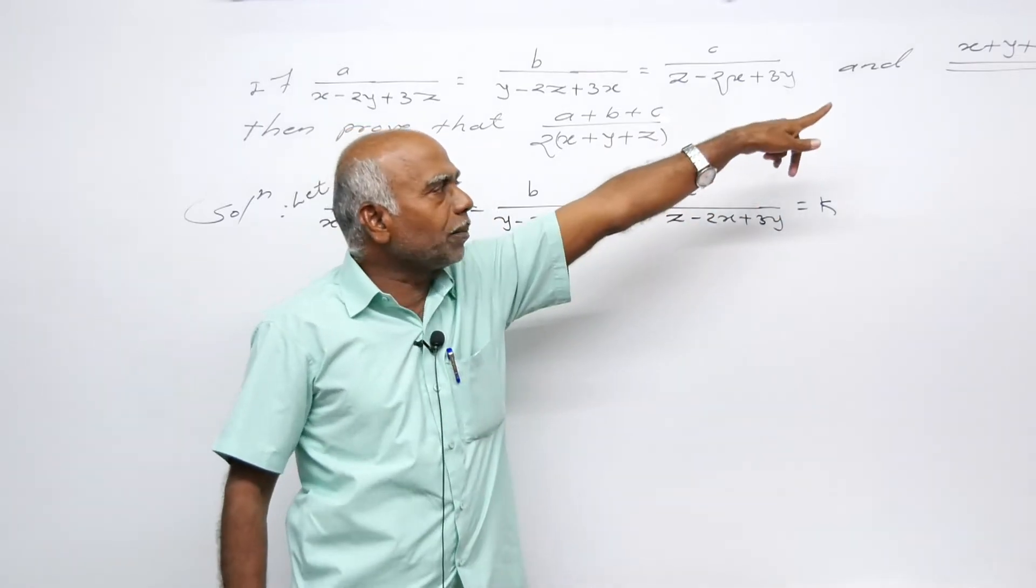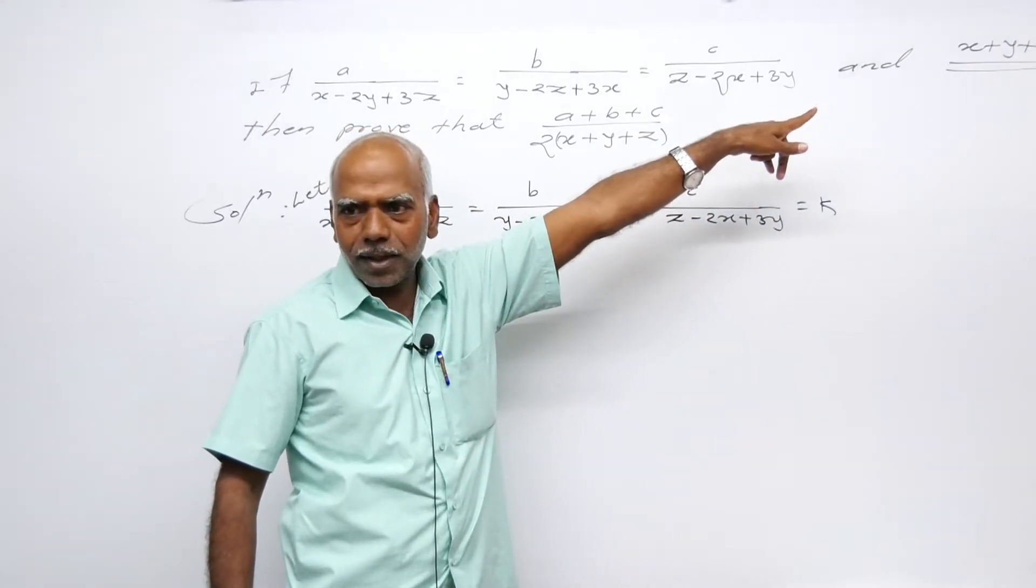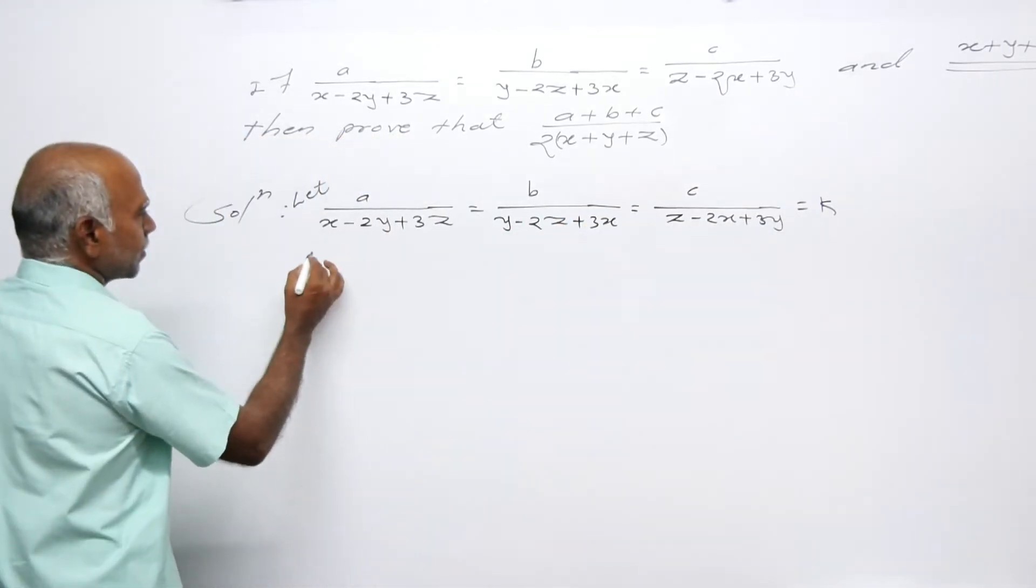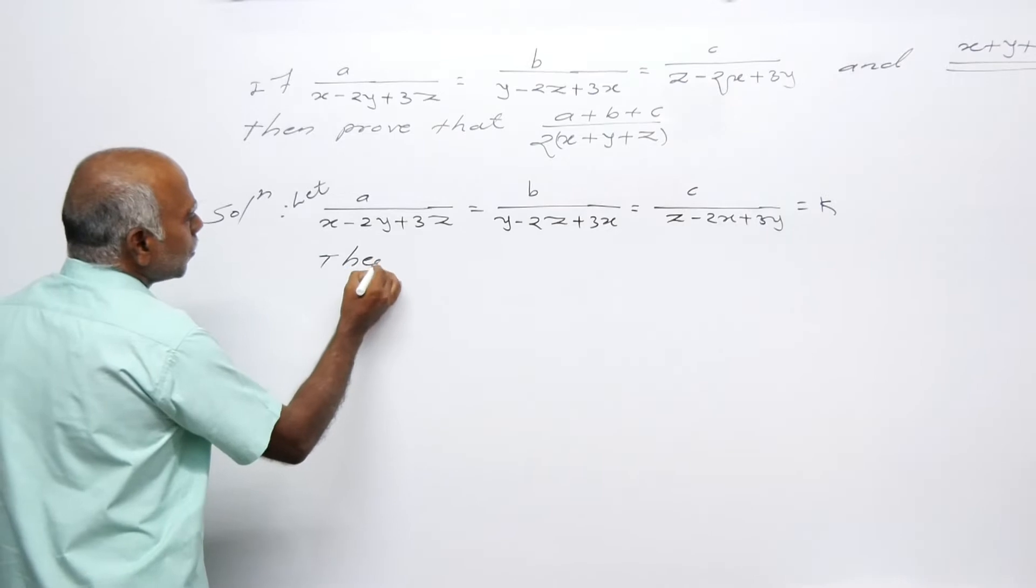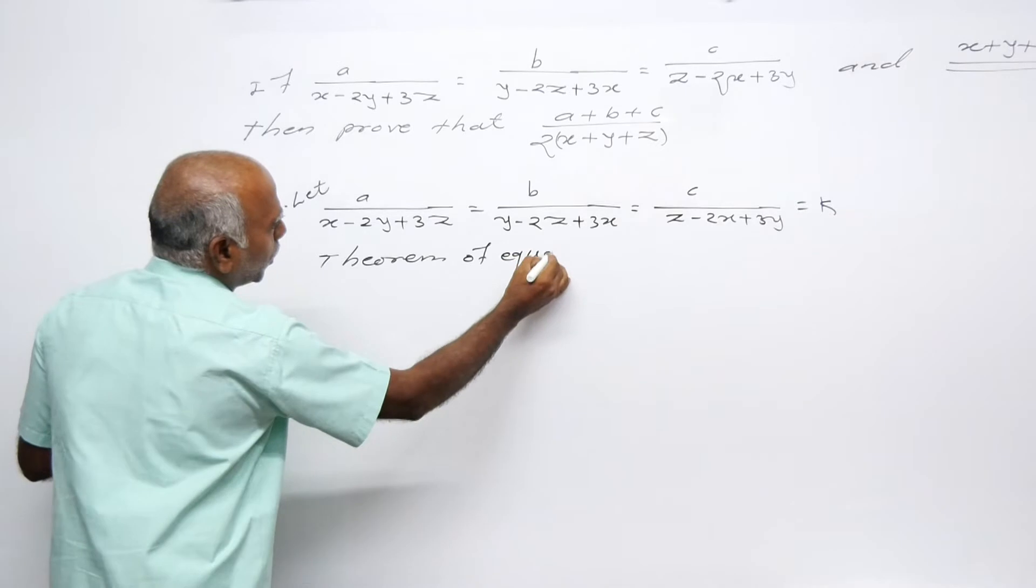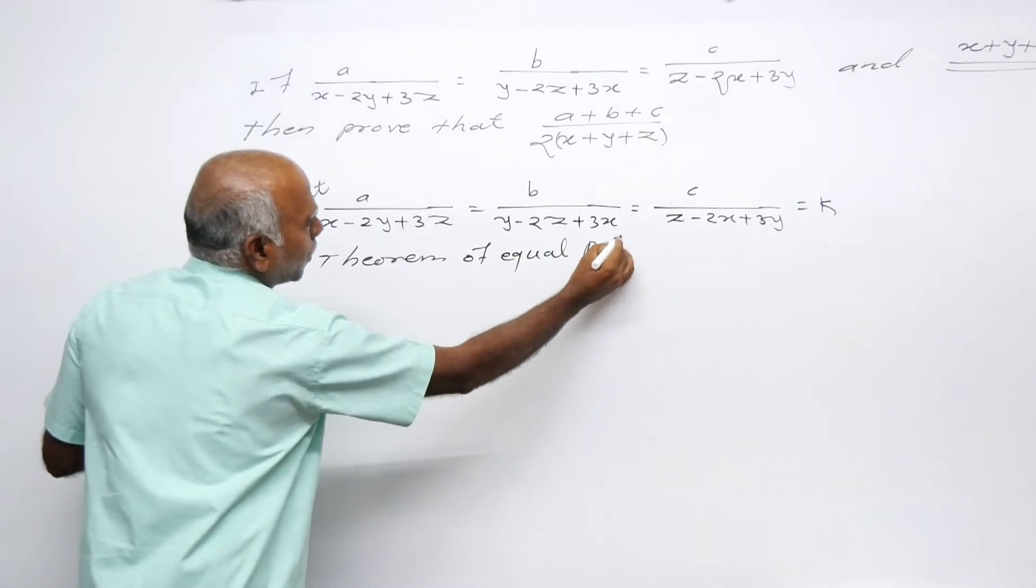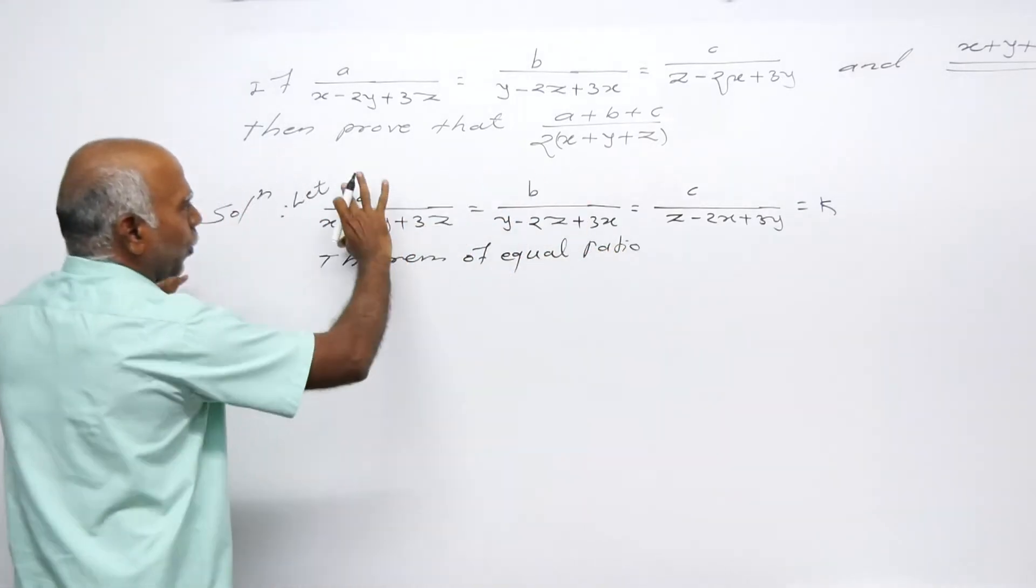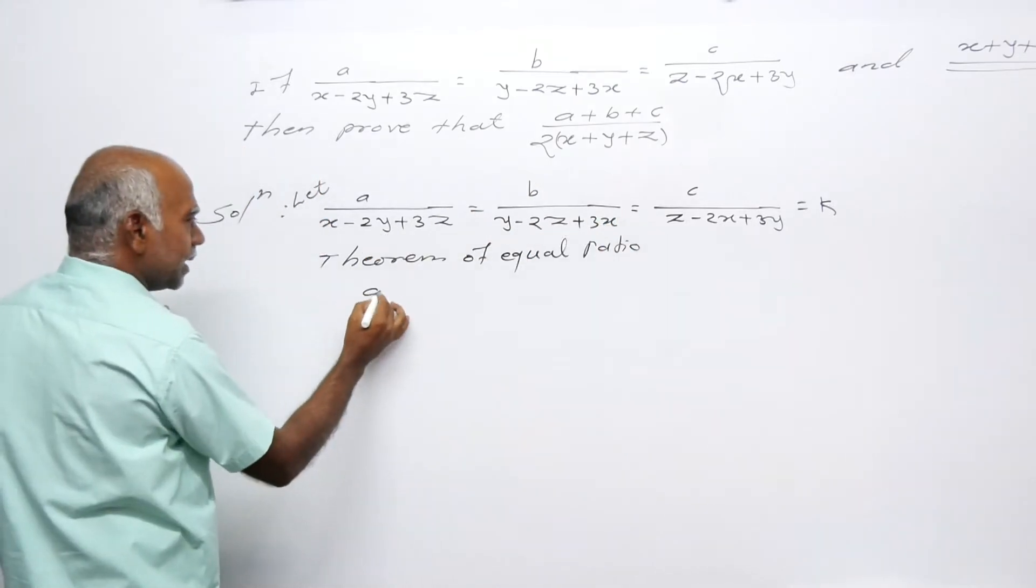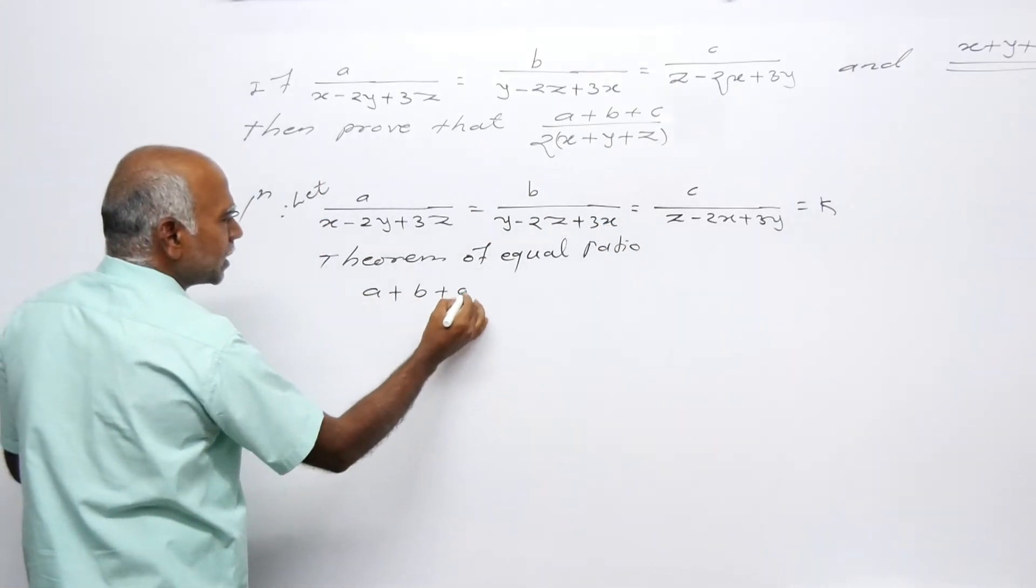Let's work on this carefully. We'll use the theorem of equal ratio. When we calculate, we need to find a plus B plus C.